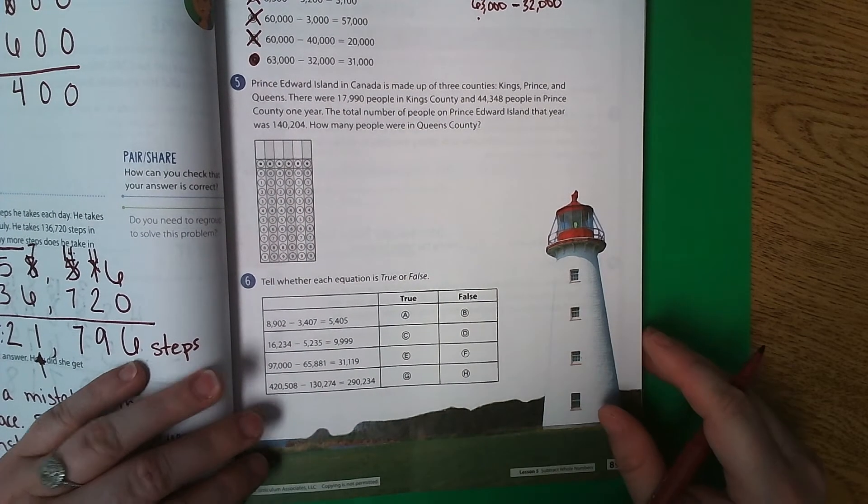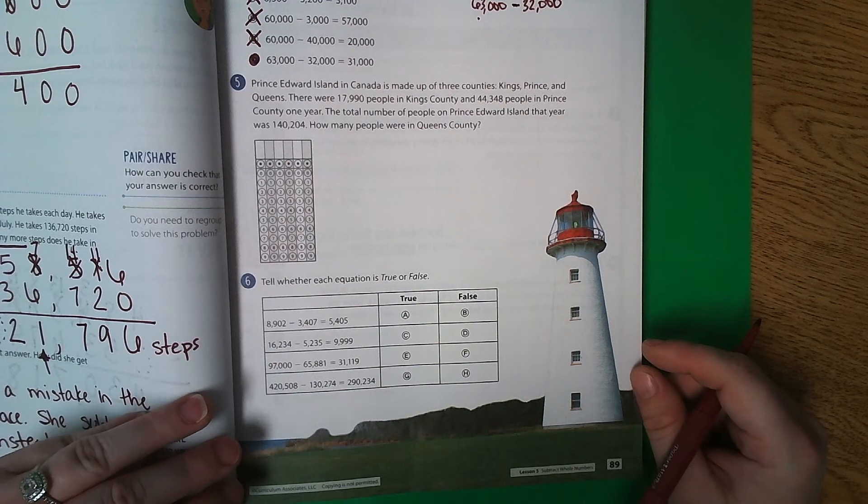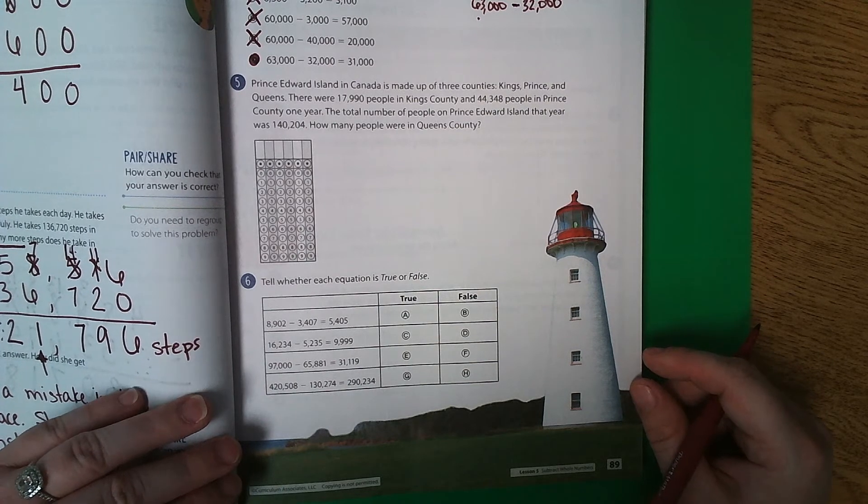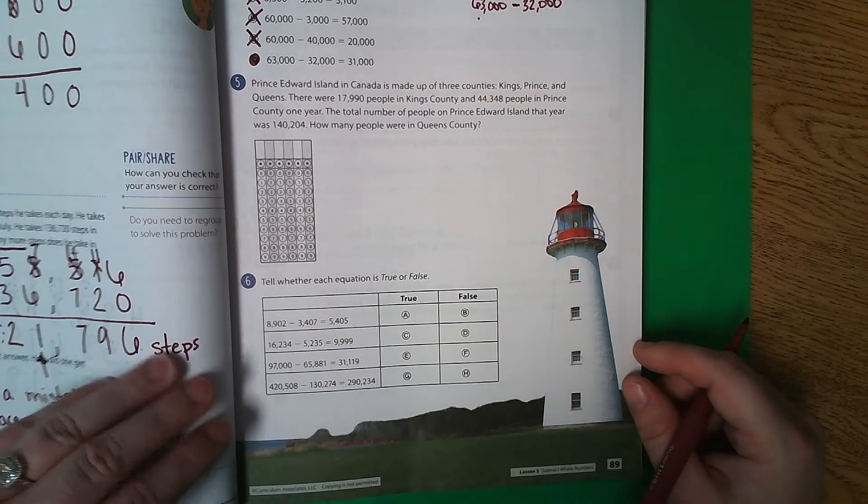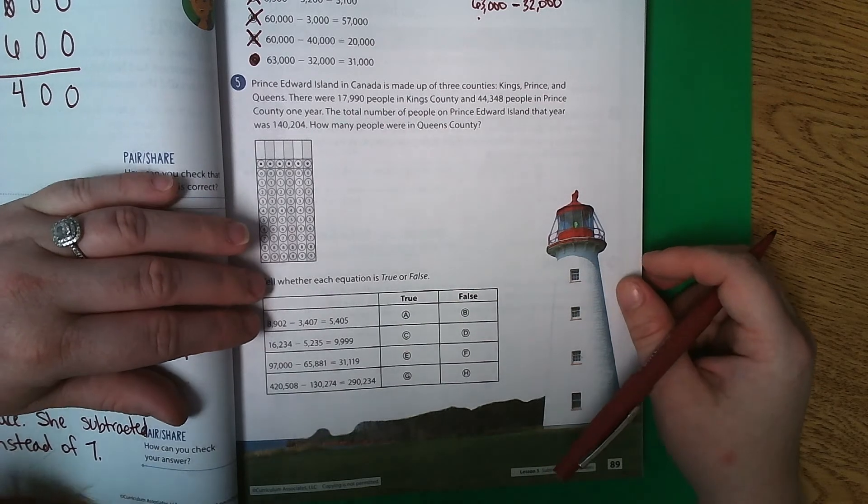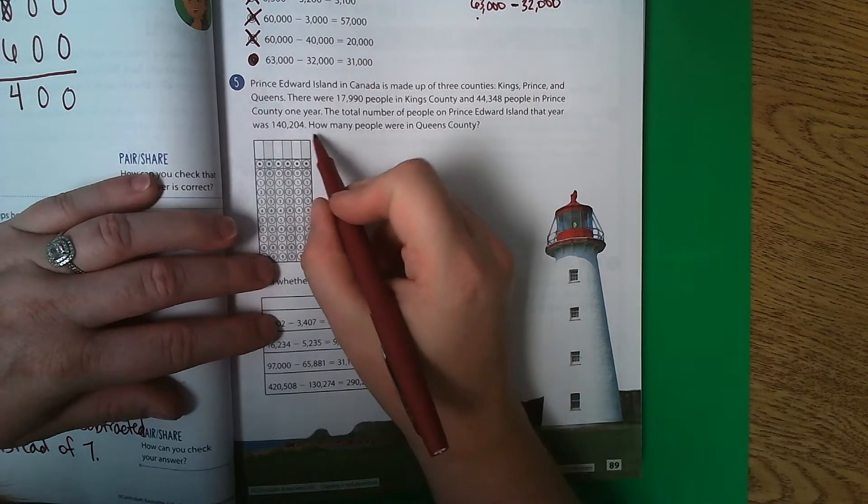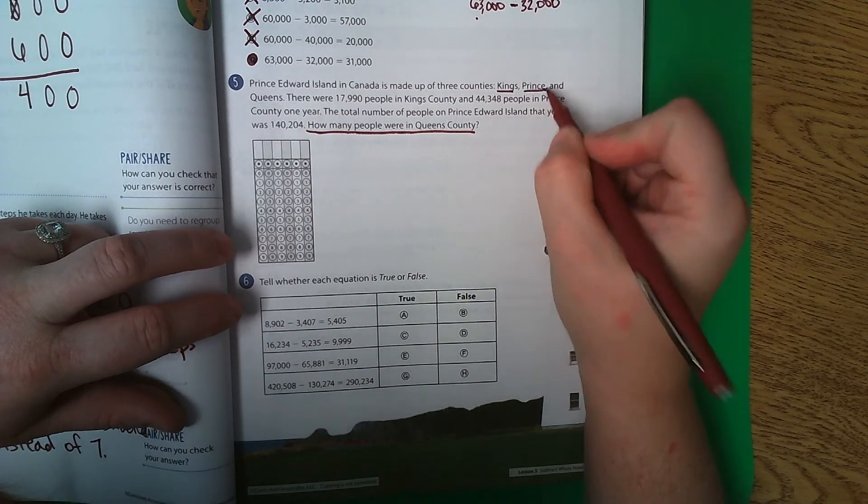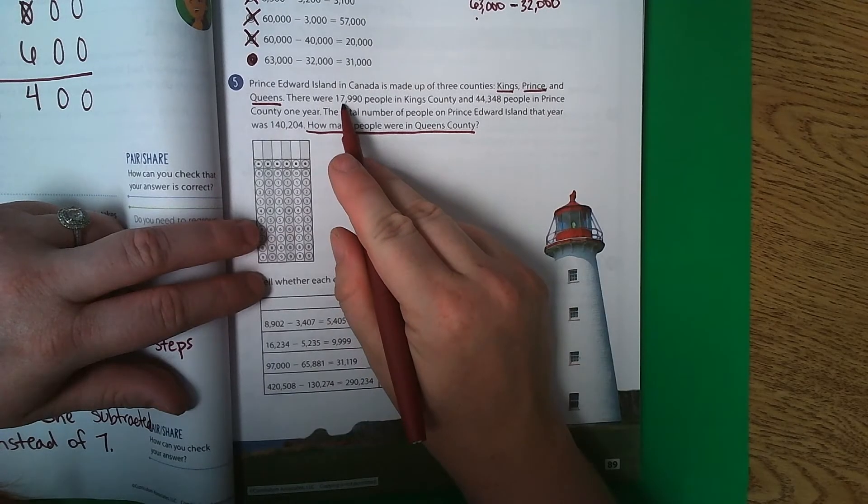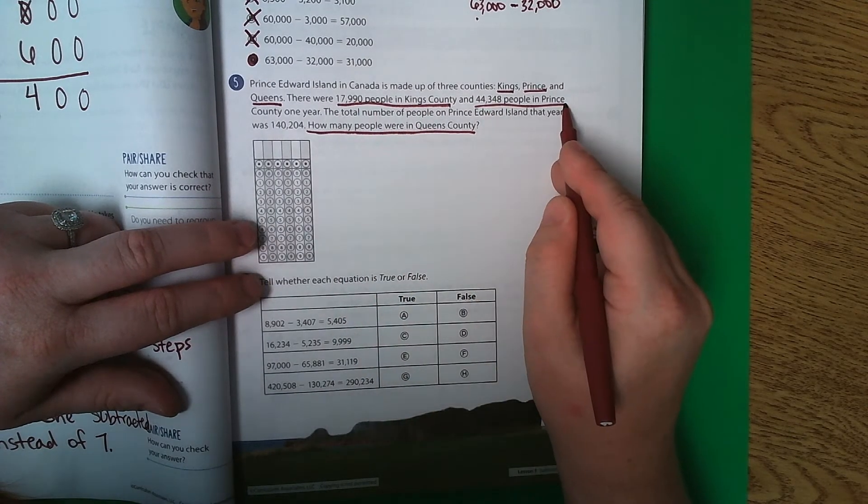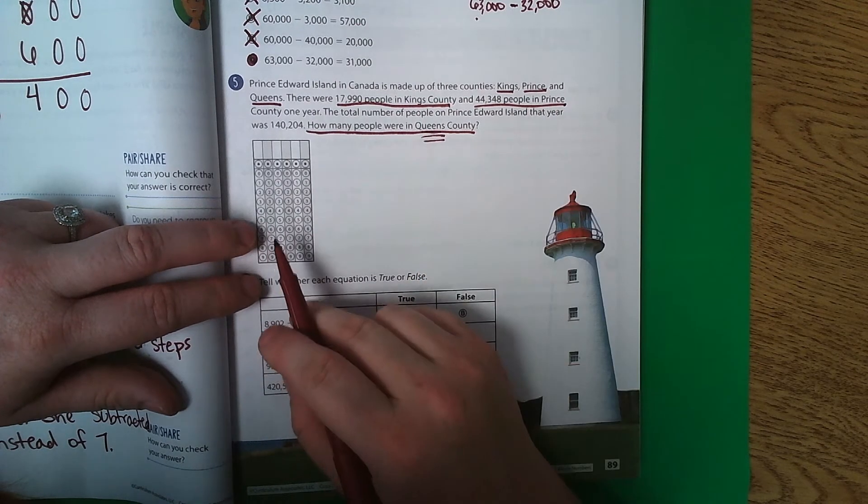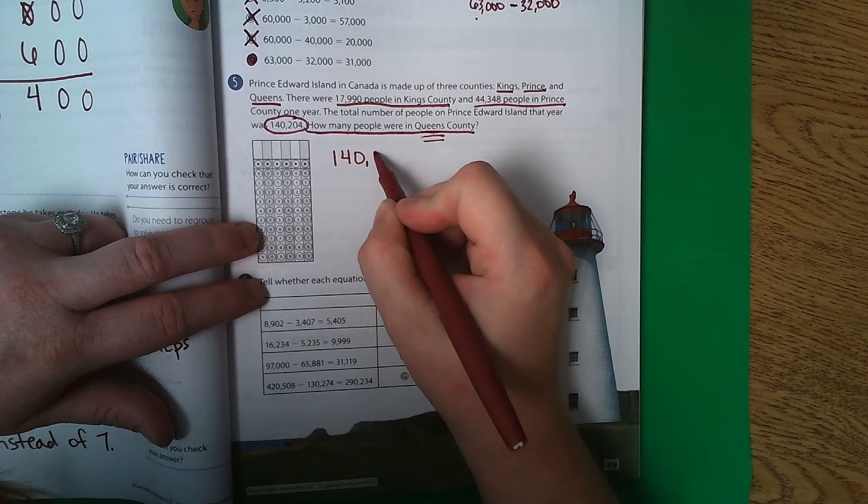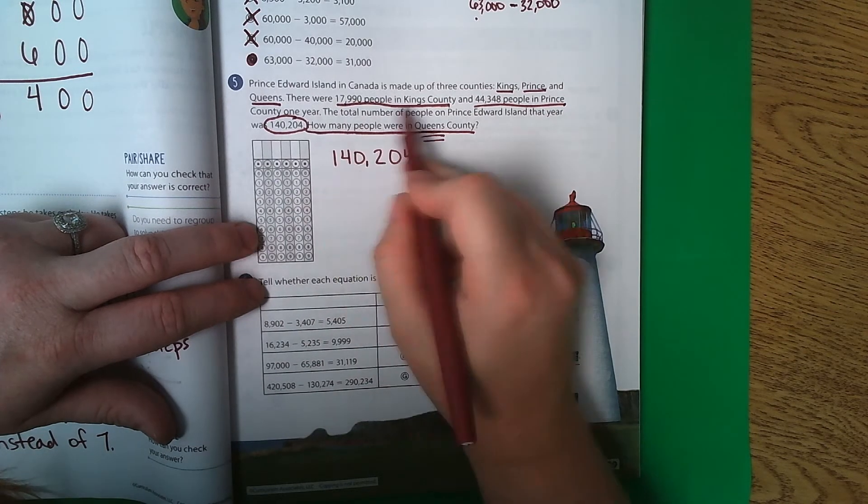Number 5. Prince Edward Island in Canada is made up of three counties: Kings, Prince, and Queens. There were 17,990 people in Kings County and 44,348 people in Prince County one year. The total number of people on Prince Edward Island that year was 140,204. How many people were in Queens County? This is tricky. So we're talking about three counties here. We know that Kings has this many and we know that Prince has that many, but we've got to find out how many are in Queens County. So I'm going to take this number because it's the total. So I'm going to write 140,204. First I'm going to subtract Kings County. So that'll be 17,990.